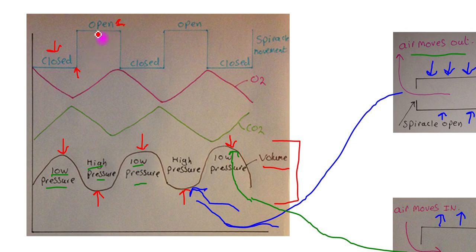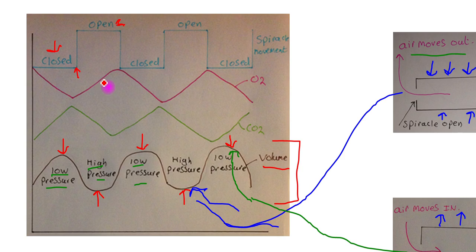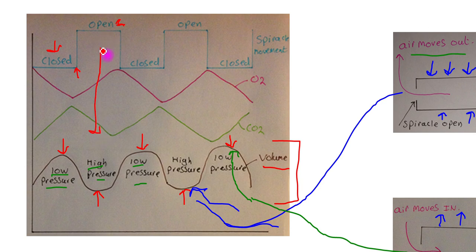When the spiracle opens, gas exchange occurs between the tracheal system and the surrounding atmosphere. Oxygen levels within the tracheal system increase as oxygen enters through the open spiracle, and carbon dioxide levels reduce as it leaves via the open spiracle. This part of the graph represents the gases being exchanged between the atmosphere and the tracheal system.